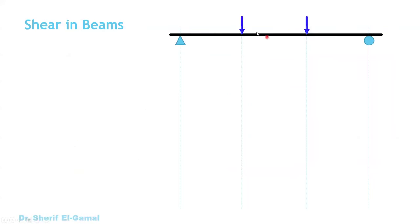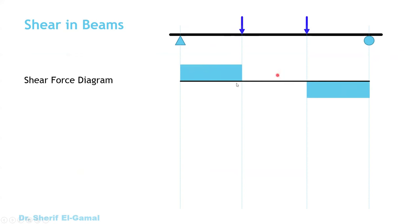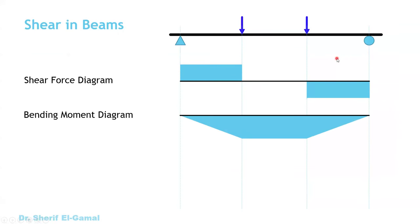If we have a simply supported beam under two concentrated loads, we draw the shear and moment diagrams. This is the shear force diagram — you have a shear force in the shear span, no shear force at the middle part if loads are symmetric, and shear force again at the end of the beam. For the bending moment, this shows the bending moment diagram, the positive moment. Let's draw the beam and see how stresses and cracking develop due to the combination of shear and bending moment.